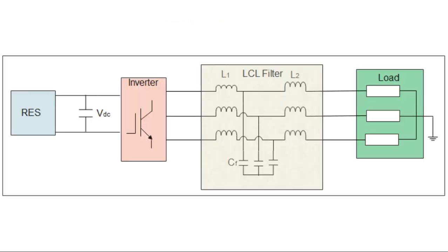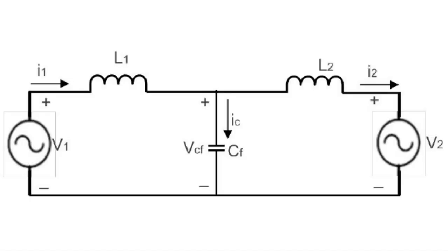The schematic layout of a two-level voltage source inverter interconnected with a DC voltage source with a renewable energy source and an LCL filter interconnected can be seen in this circuit. Now let's carry out an example of how we can calculate the values of the inductors and the capacitors.